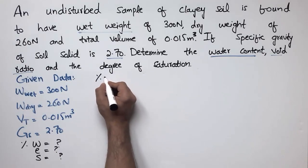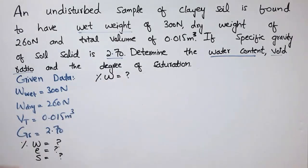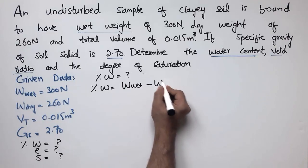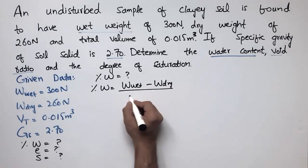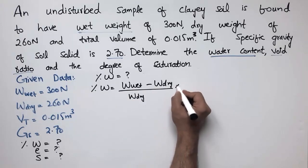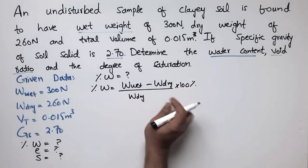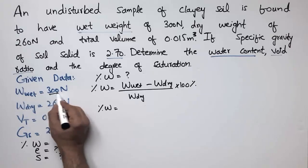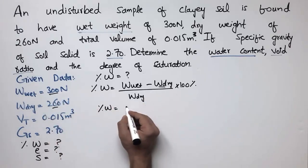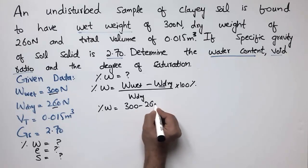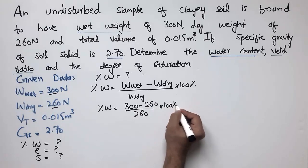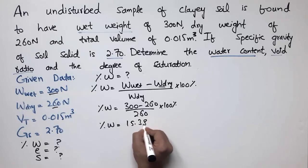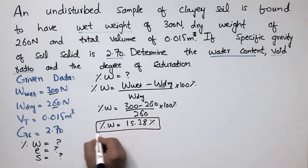The first one is water content. To find the water content we use the formula: water content = (weight of wet soil − weight of dry soil) / weight of dry soil × 100%. Plugging in values: (300 − 260) / 260 × 100% gives us a water content of 15.38%.